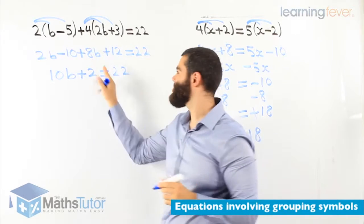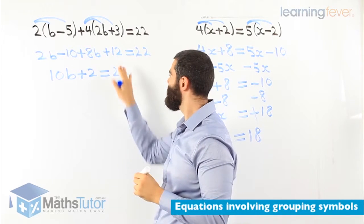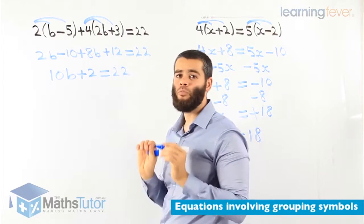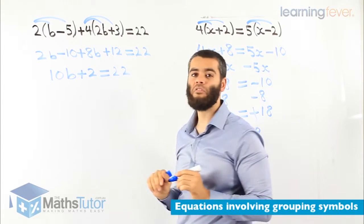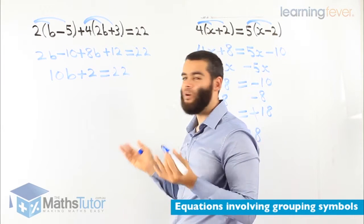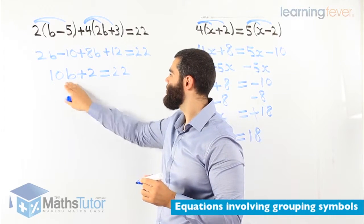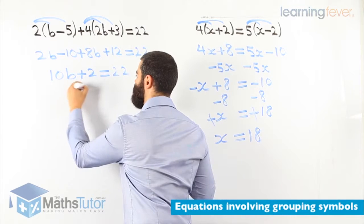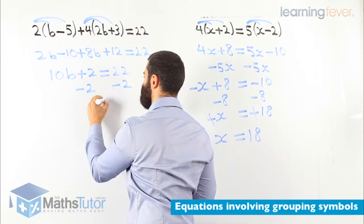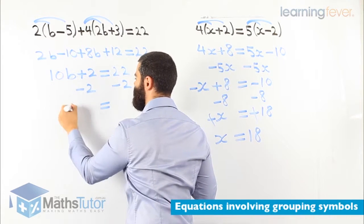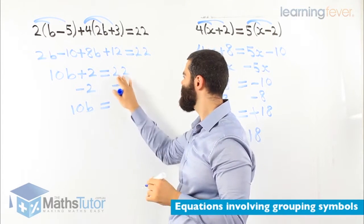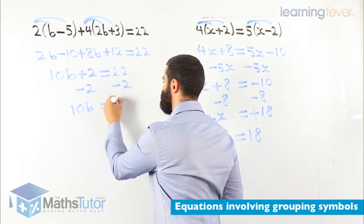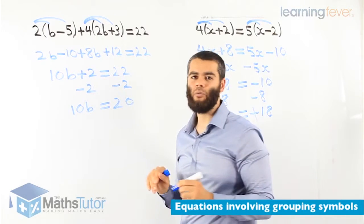Very easy to make mistakes in these little simple processes here. So it is very important that you pay attention and you be careful. 10b plus 2 equals to 22. Now what? Well, it is an equation. 10b plus 2. We basically minus 2 from one side minus 2 from the other side. 10b because 2 take away 2 is gone. 22 take away 2 is 20.